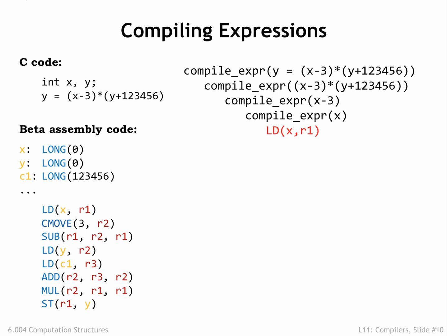The process we're following is called recursive descent. We've used recursive calls to compile expression to process each level of the expression tree. At each recursive call, the expressions get simpler until we reach a variable or constant where we can generate the appropriate instruction without descending further. At this point, we've reached a leaf of the expression tree and we're done with this branch of the recursion.